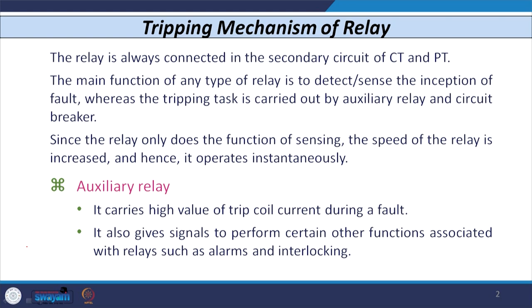The auxiliary relay has two main tasks. First, it carries high trip coil current during the fault — the relay only senses the fault, whereas carrying the high trip coil current is done by the auxiliary relay. Second, it also gives signals to perform several other functions like alarms, mechanical interlocking, or electrical interlocking. Those tasks are performed by the auxiliary relay as it has multiple contacts.